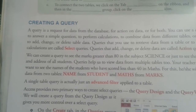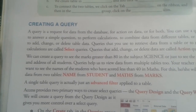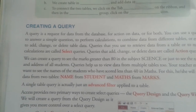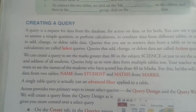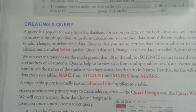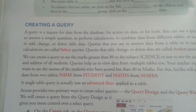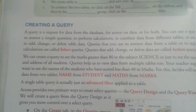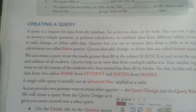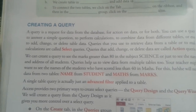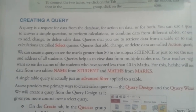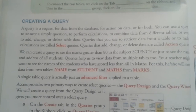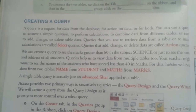Any type of information which you are getting from a table is called a query, or even to add, change, or delete table data. Queries that use the entire data from a table to make calculations are called select queries. Queries used to add, change, or delete data are called action queries.